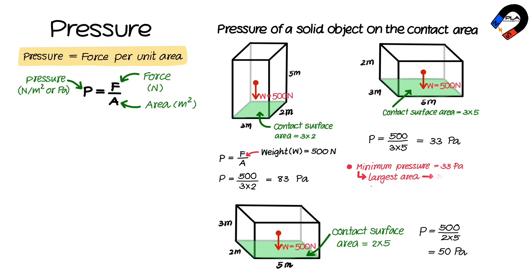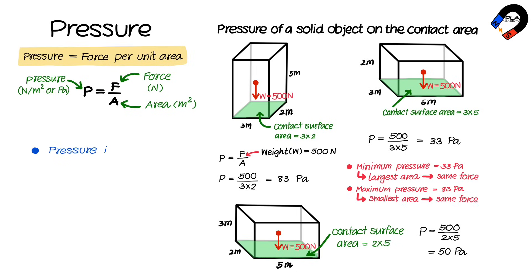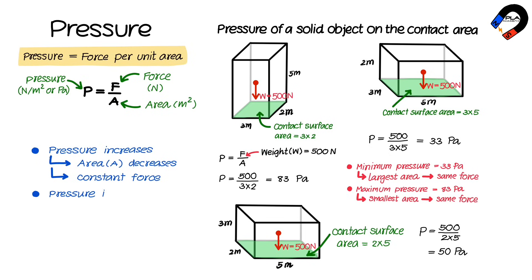The minimum pressure is 33 pascals when the largest contact area is used while force remains the same, and the maximum pressure is 83 pascals when the smallest contact area is used. We can conclude that pressure increases as contact area decreases while force remains the same, and pressure increases as force increases while contact area remains the same.